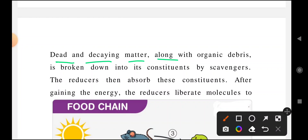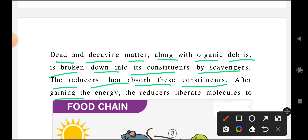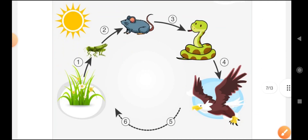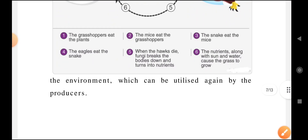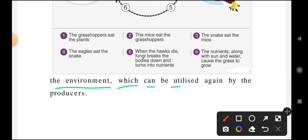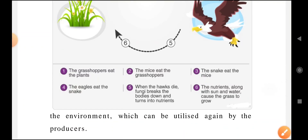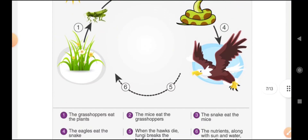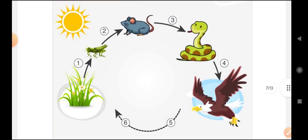Dead and decaying matter, along with organic debris, is broken down into constituents by scavengers. The reducers then absorb these constituents, and after gaining the energy, they liberate the molecules back to the environment, which can be utilized again by producers. This recycling process is central to the food chain.